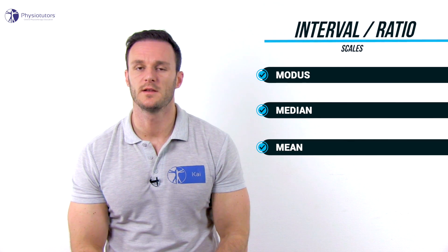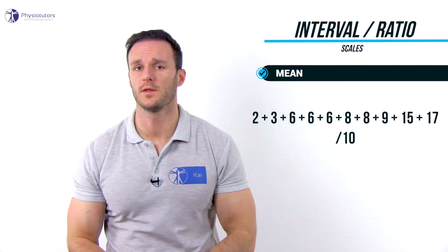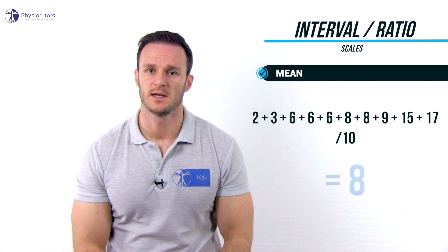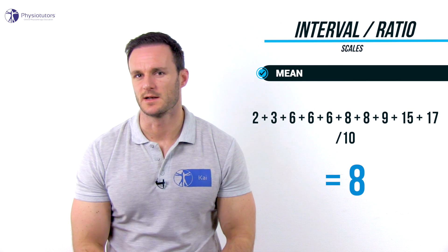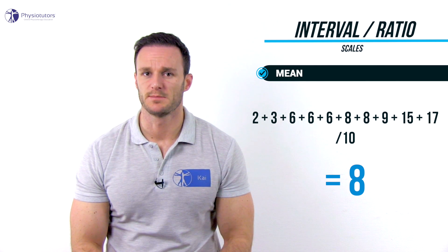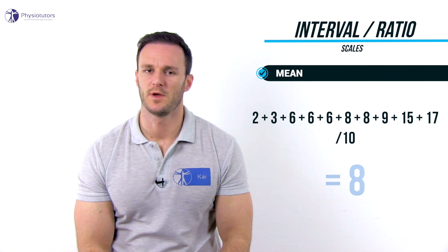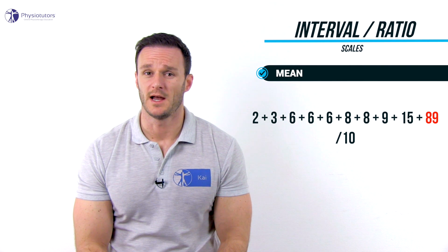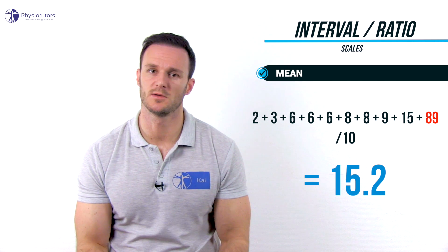For data measured on interval and ratio scales, the mean and standard deviation can be calculated. The mean is calculated by adding up all the measured scores divided by the number of scores — in our case the mean would be 8. The difference between the mean and the median is that the mean is much more influenced by extremely low or high values. For example, if we had 89 instead of 17 as the maximum, our mean would be 15.2, while our median would still be 8.